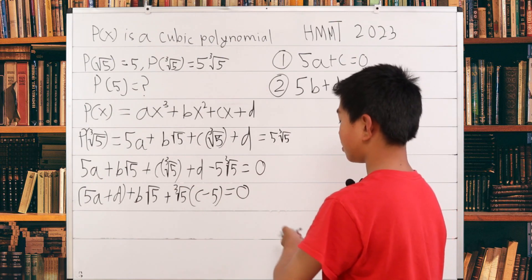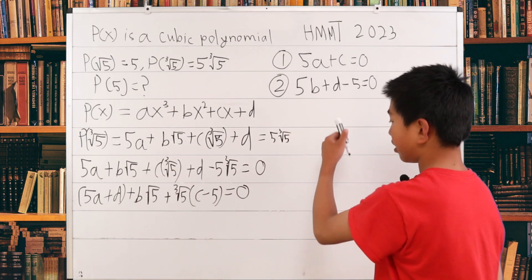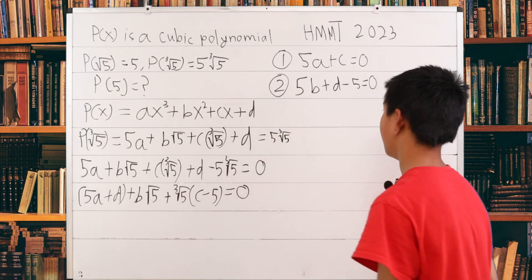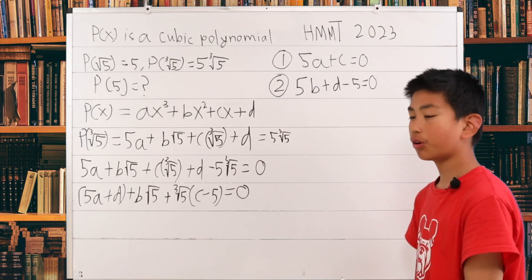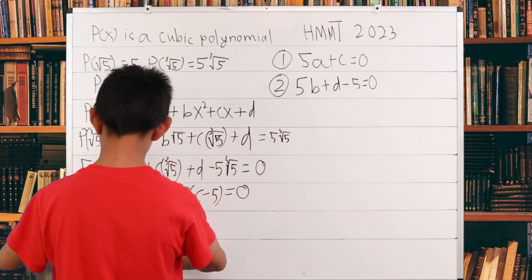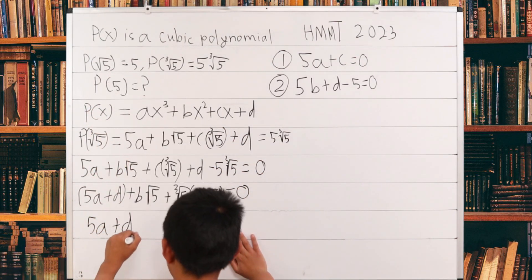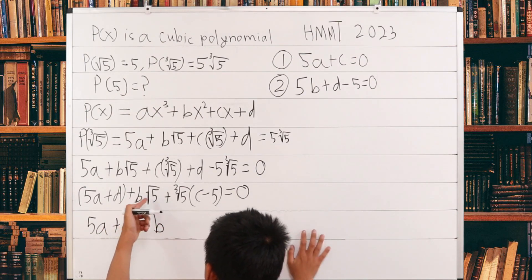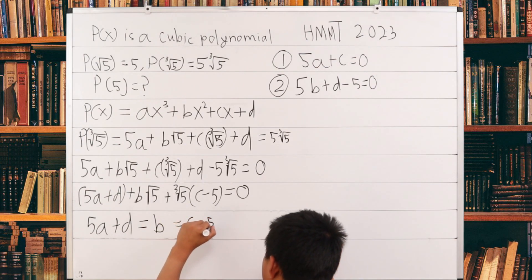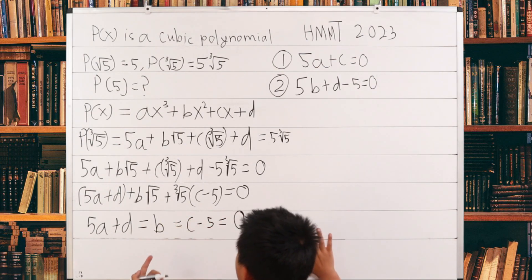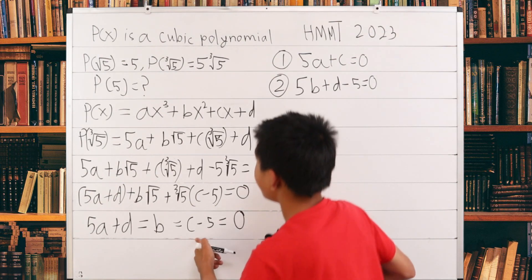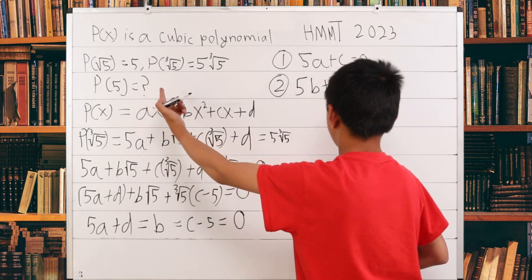Once again, in this scenario, earlier we explained that all of these have to be equal to 0. So we use the same strategy we implied up here. According to that, we are given that 5a + d = b, since the ∛5 is irrelevant, equals c - 5, equals 0. Now, we can imply the same trick up here and solve the formula for P(5).